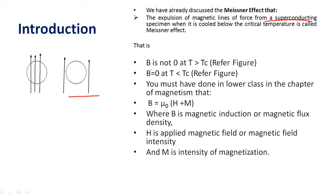That is, B is not 0 at T > Tc when it is a normal conductor. But B becomes 0 when T becomes less than Tc, that is below the critical temperature.